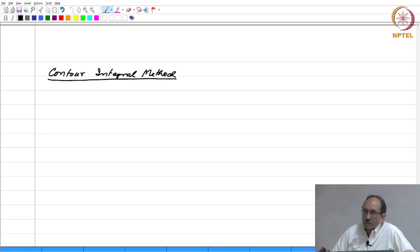Actually, for rational transfer functions this will turn out to be one of the easiest methods. And the formula is this: it is 1 by 2 pi j integral over C, X(z) z to the n minus 1 dz.